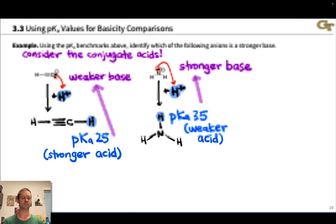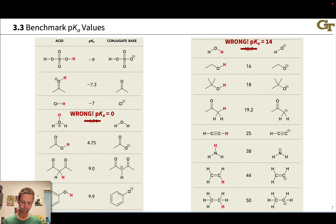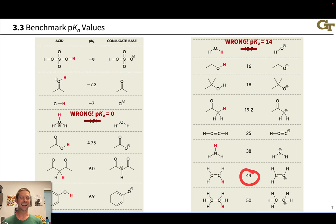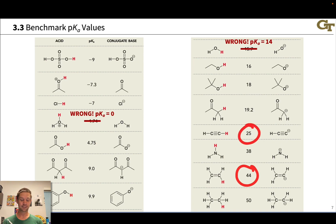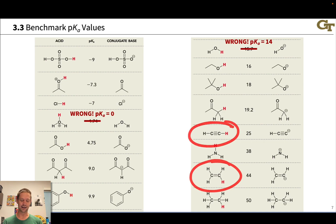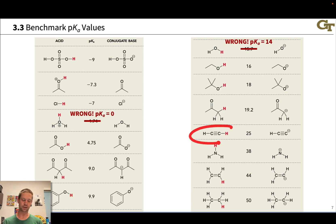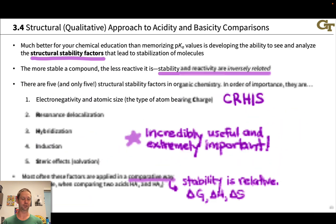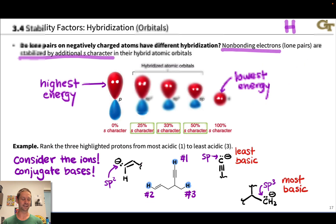Looking at the pKa table to show the impact of this effect: for an sp³ C–H, a classic example is ethane, with a pKa of about 50. We get about 6 pKa units of stabilization when we go from sp³ to sp². Going from sp² to sp — ethylene to ethyne — we get an even more dramatic stabilization of something like 19 pKa units. Terminal alkyne protons are actually quite acidic, far more than we would predict without understanding how hybridization stabilizes lone pairs.